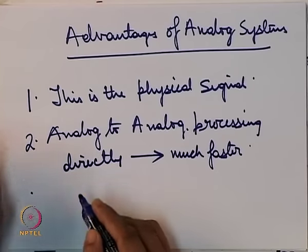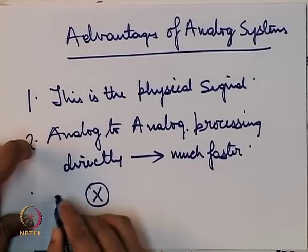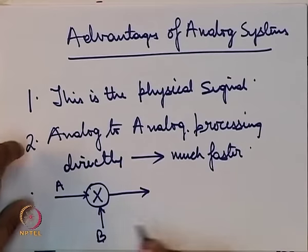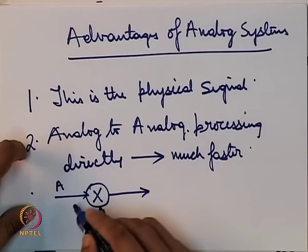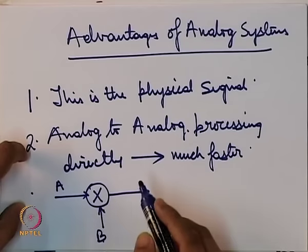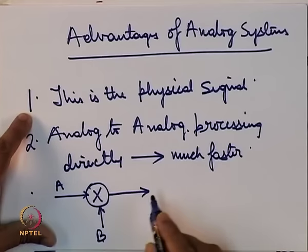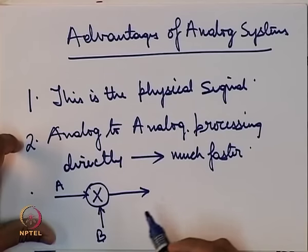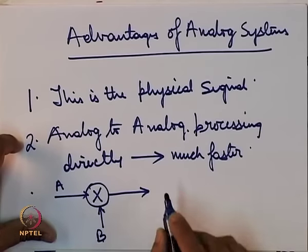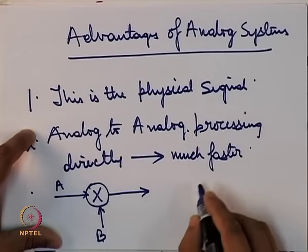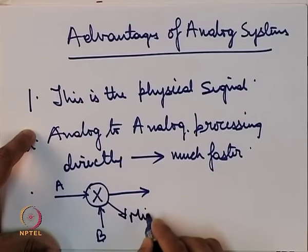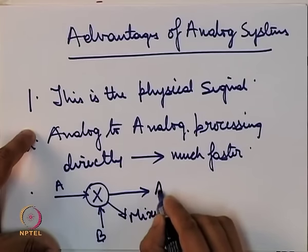The second important advantage is that since we as human beings understand only analog signals, analog-to-analog processing is much faster. For example, while multiplication can be done in the digital domain using set algorithms, it would be much faster if done directly in the analog domain. The same multiplication of signals A and B is much faster in the analog domain. In the case of a receiver, we do such an operation in a mixer — a device that multiplies two signals and gives an output A multiplied by B.